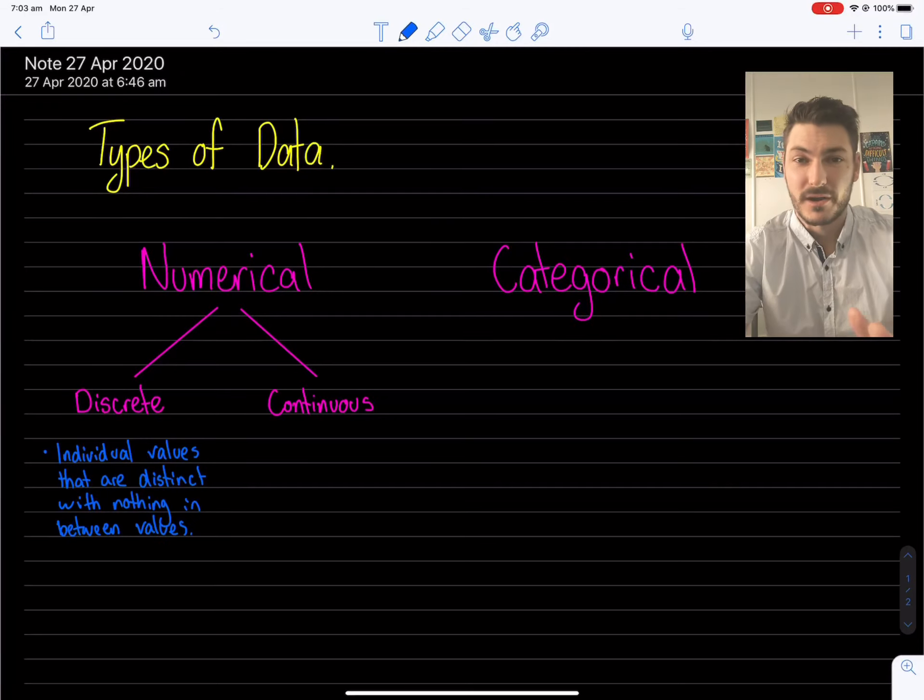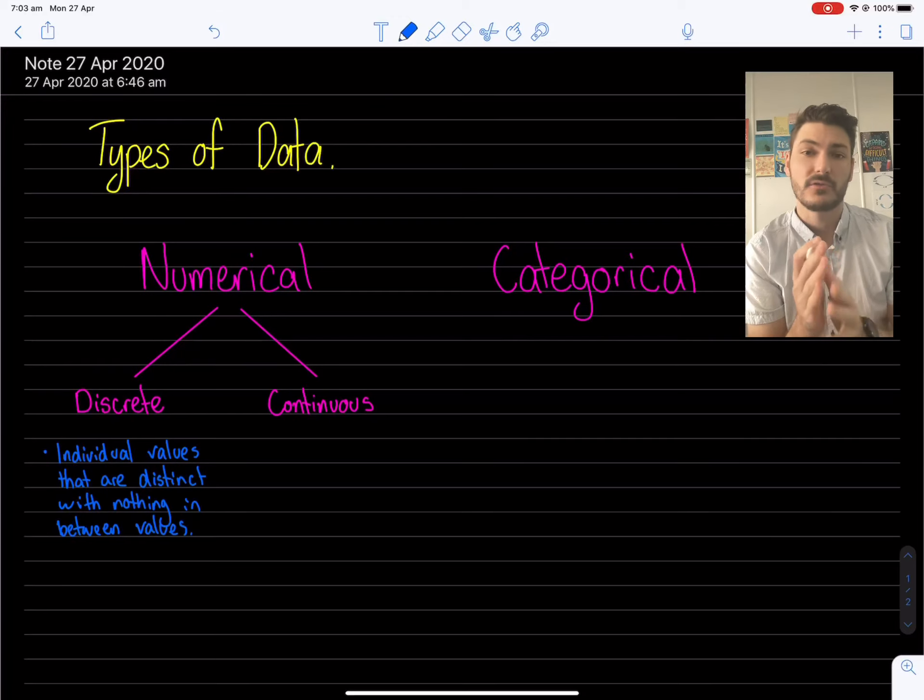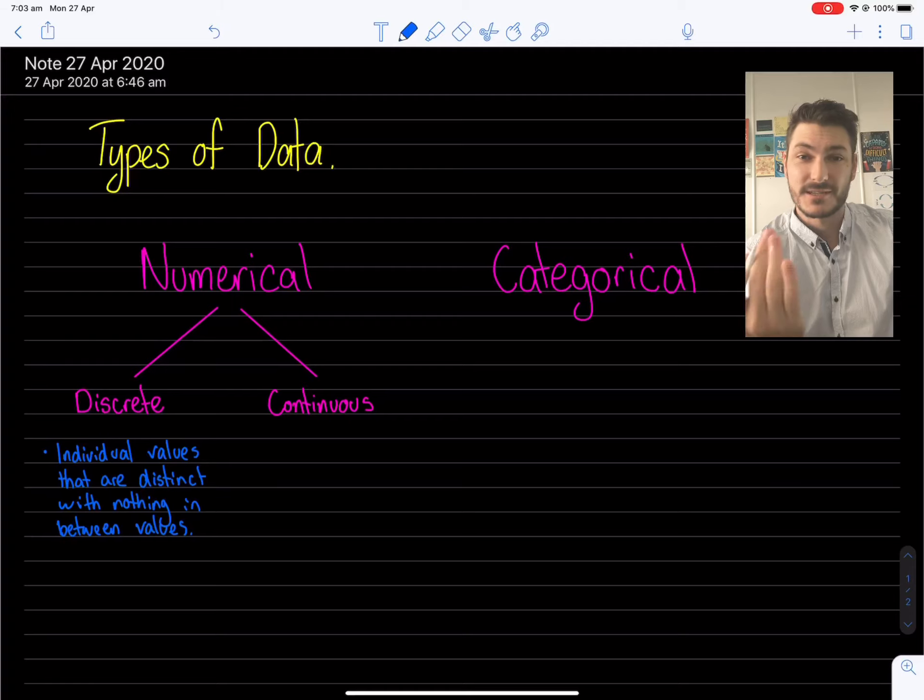with nothing in between values. And what I mean by nothing in between values, I mean, if you're either this value or you're this value. There's no like half values or quarter values or anything like that. Often we represent discrete data as integers only. So numbers one, two, three, four, five. But that's not always the case. And I'm going to give a counterexample very shortly.